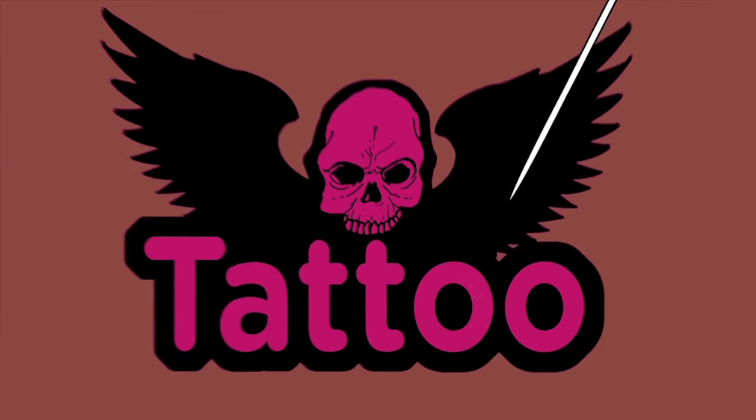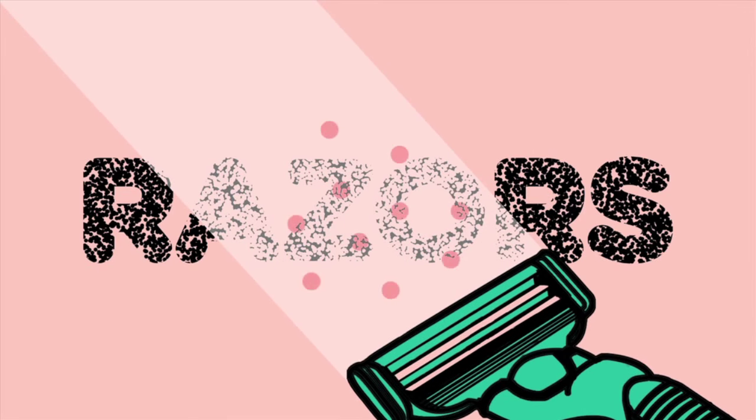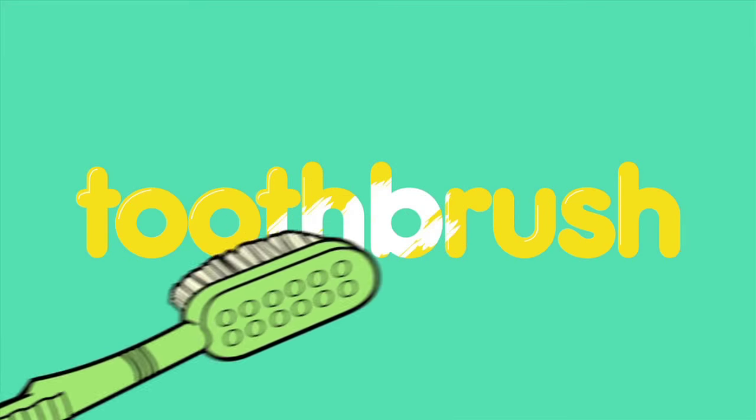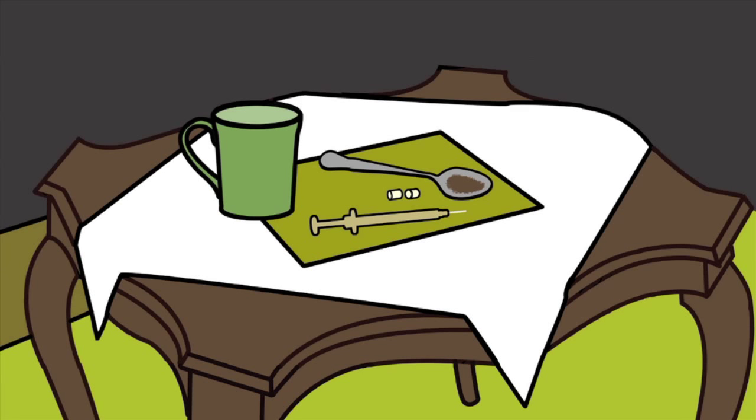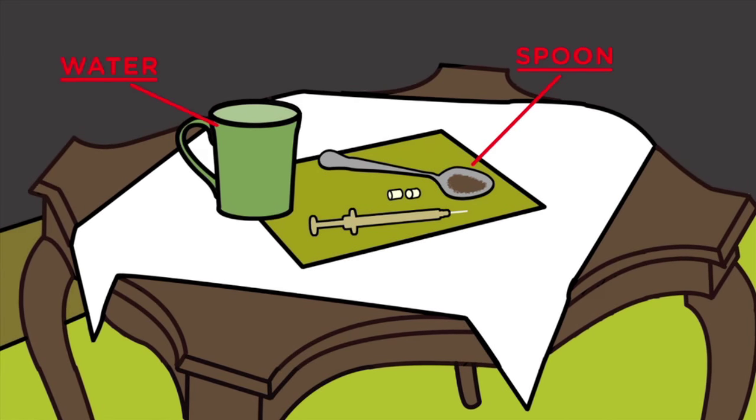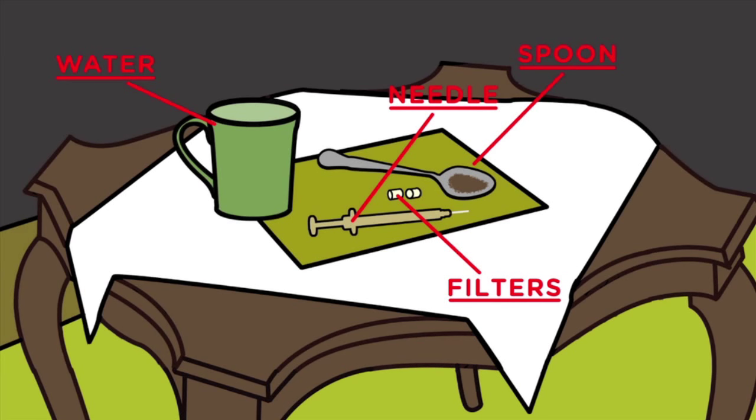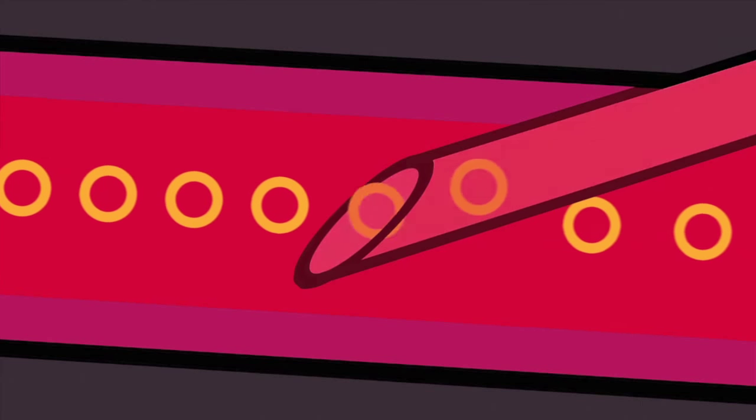If you share tattoo equipment, if you share razors, if you share toothbrushes. The most dangerous is sharing works: spoons, water pots, filters, and especially needles and syringes. Sharing works is the easiest way of spreading a virus.